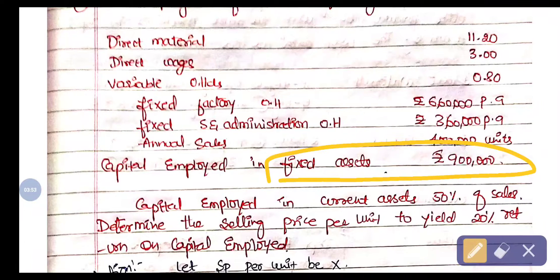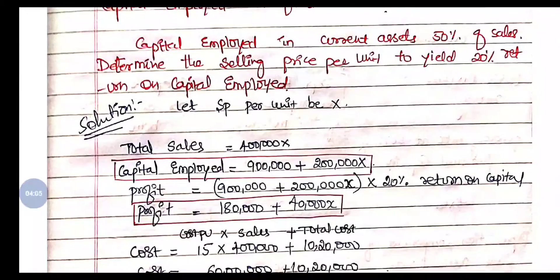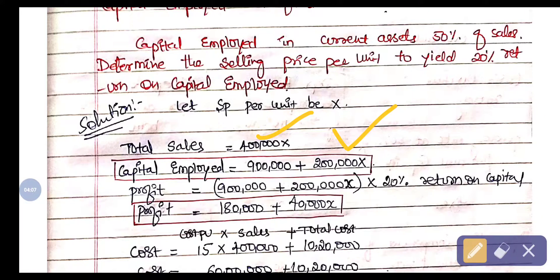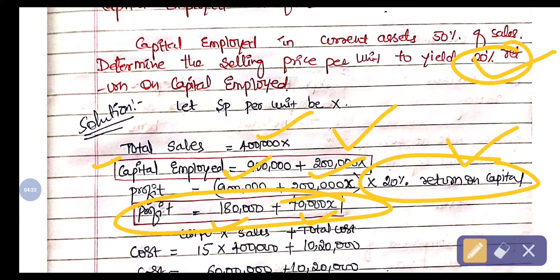Next, capital employed: fixed assets are 9 lakhs, and current assets are 50% of sales = 50% of 4 lakh x = 2 lakh (since sales units are 4 lakh). So total capital employed = 9 lakh + 2 lakh. The required profit at 20% return = 20% of (9 lakh + 2 lakh x) = 1,80,000 + 40,000x.